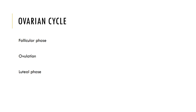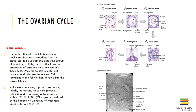The ovarian cycle consists of the follicular phase, ovulation, and the luteal phase. The follicular phase is where the follicle grows and encompasses day one through approximately day 13. Primordial follicles containing the primary oocytes are activated, forming primary follicles with simple cuboidal cells called granulosa cells surrounded by thecal cells. The granulosa and thecal cells begin to secrete estrogen, and the granulosa cells also secrete a glycoprotein forming a transparent membrane around the oocyte called the zona pellucida.